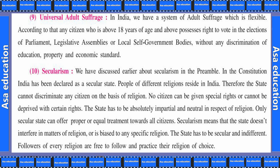Universal adult suffrage — in India we have a system of adult suffrage which is flexible. According to that, any citizen who is above 18 years of age possesses the right to vote in the elections of parliament, legislative assemblies, or local self-government bodies without any discrimination of education, property, and economic standards.